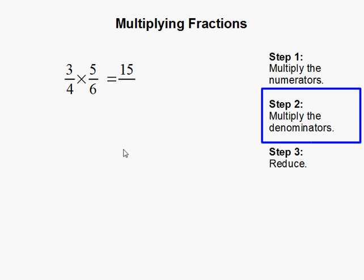Step 2, multiply the denominators. Our denominators are 4 and 6. We multiply them to get 24.